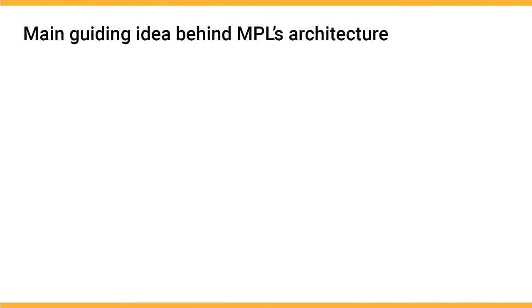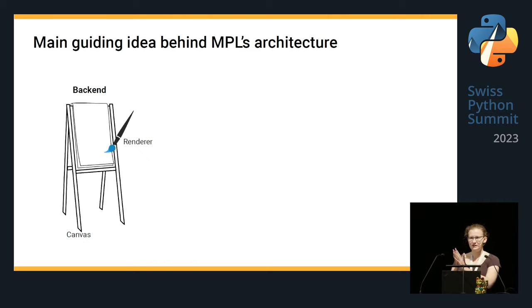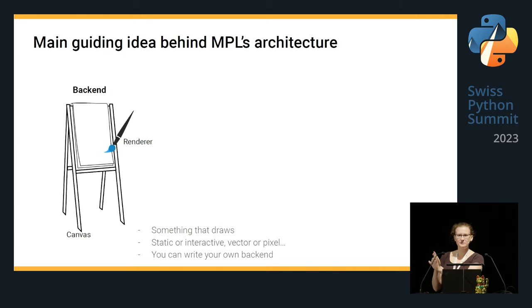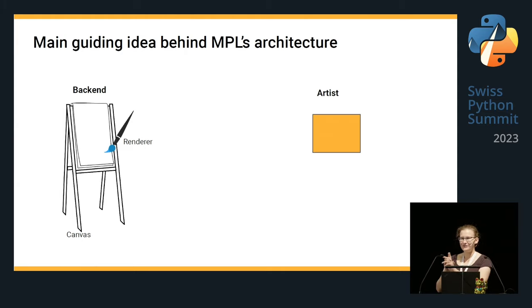For the next few minutes, I want to explain what is the main idea behind the architecture of Matplotlib and how can you get the right intuition so that, for example, you can just go to the documentation and develop a new chart yourself or that you can find your way around on Stack Overflow and sift through the legacy code and pick the one that actually makes sense. So, the main guiding idea is I want you to imagine an artist with a canvas board. Basically, we have a drawing engine, which is the canvas and the paintbrush. The paintbrush is called the renderer. And the backend in Matplotlib is something that draws. It can be static or interactive. It can be vector or pixel. You can also write your own backend. I mean, you could write a backend for a pancake printer if you wanted.